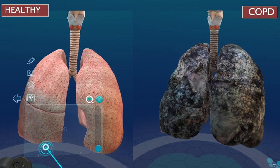Lung volumes including total lung capacity (TLC) and residual volume (RV) are typically measured, and we'll see that total lung volume is increased in COPD, particularly in the presence of emphysema, where there is significant loss of elastic recoil resulting in lung hyperinflation as seen on a chest X-ray.